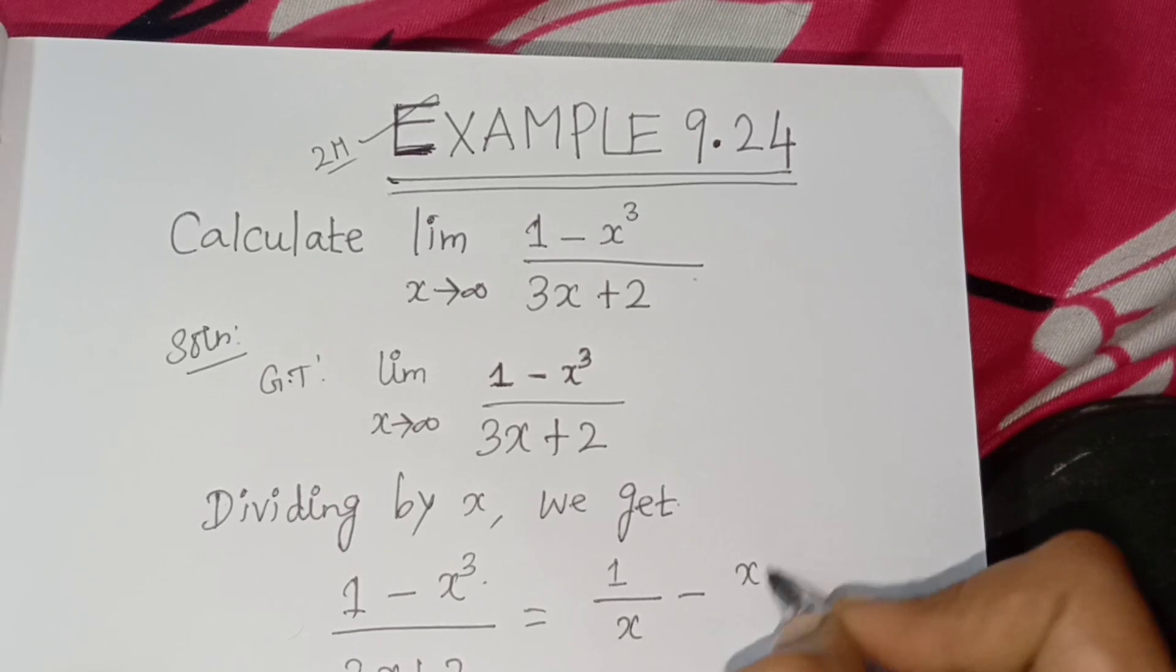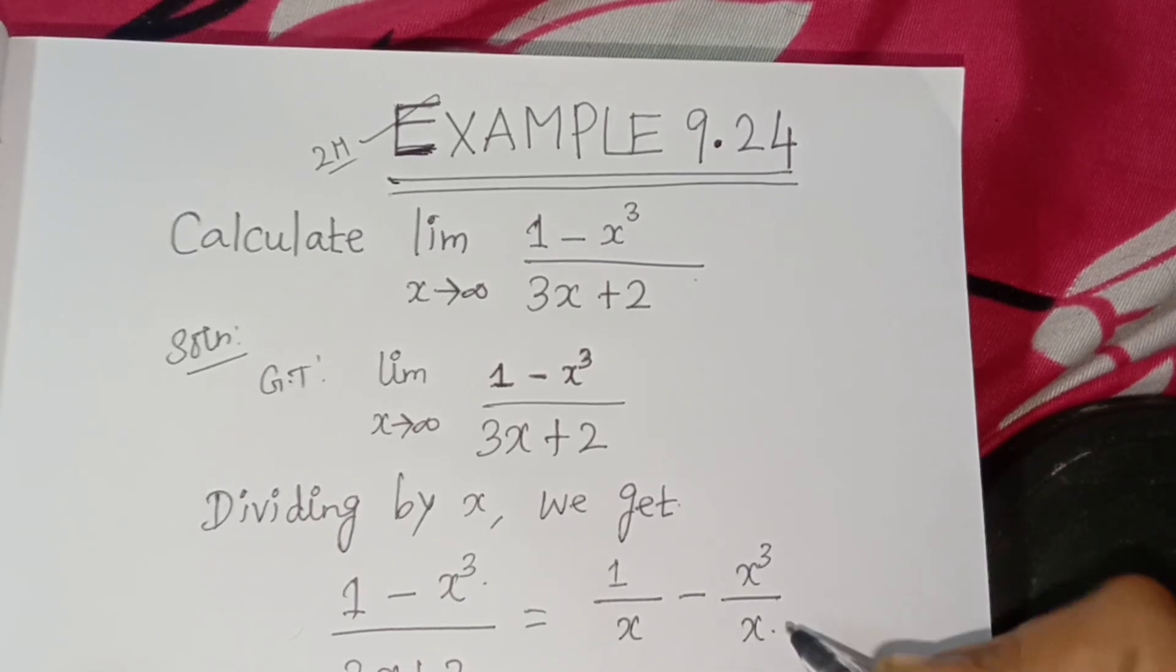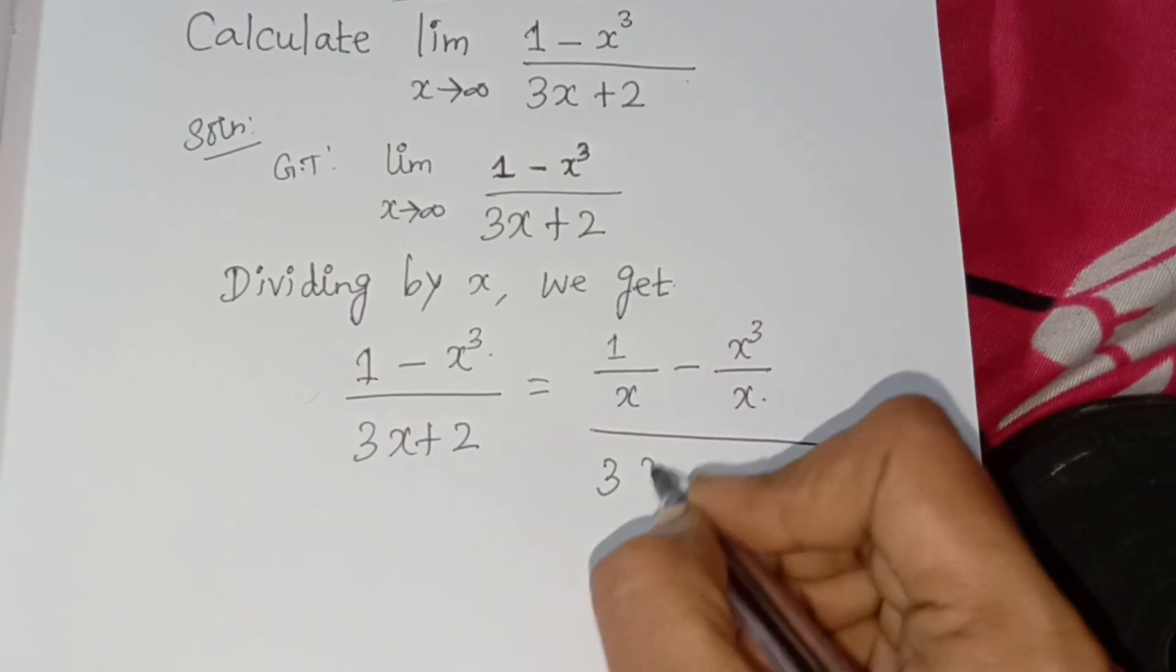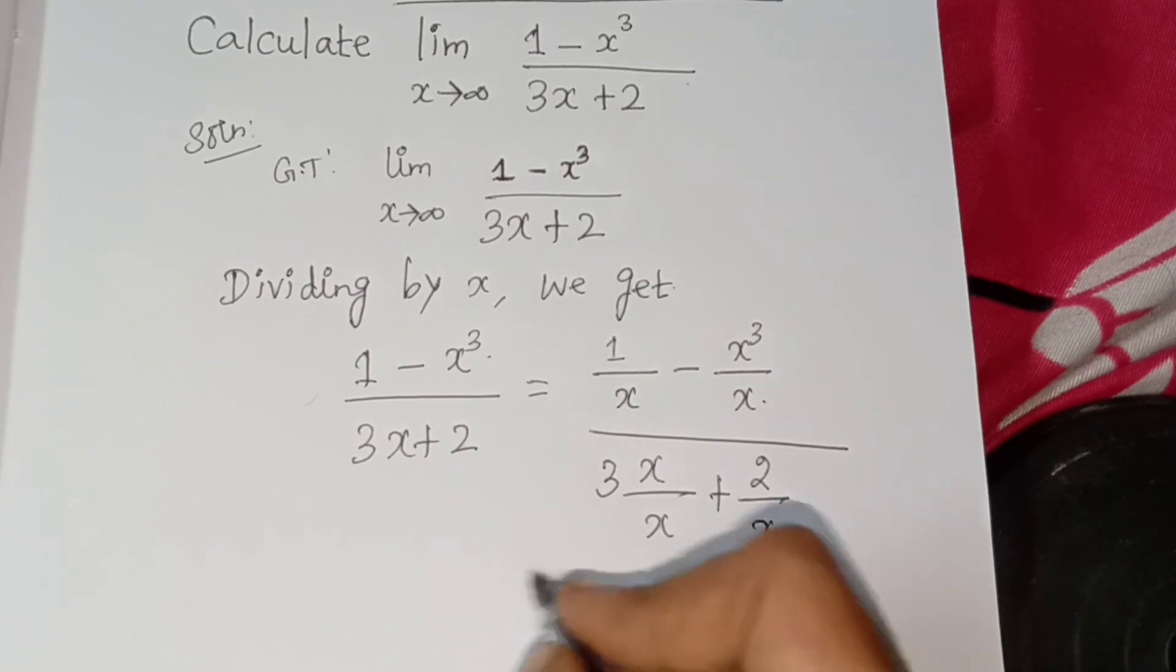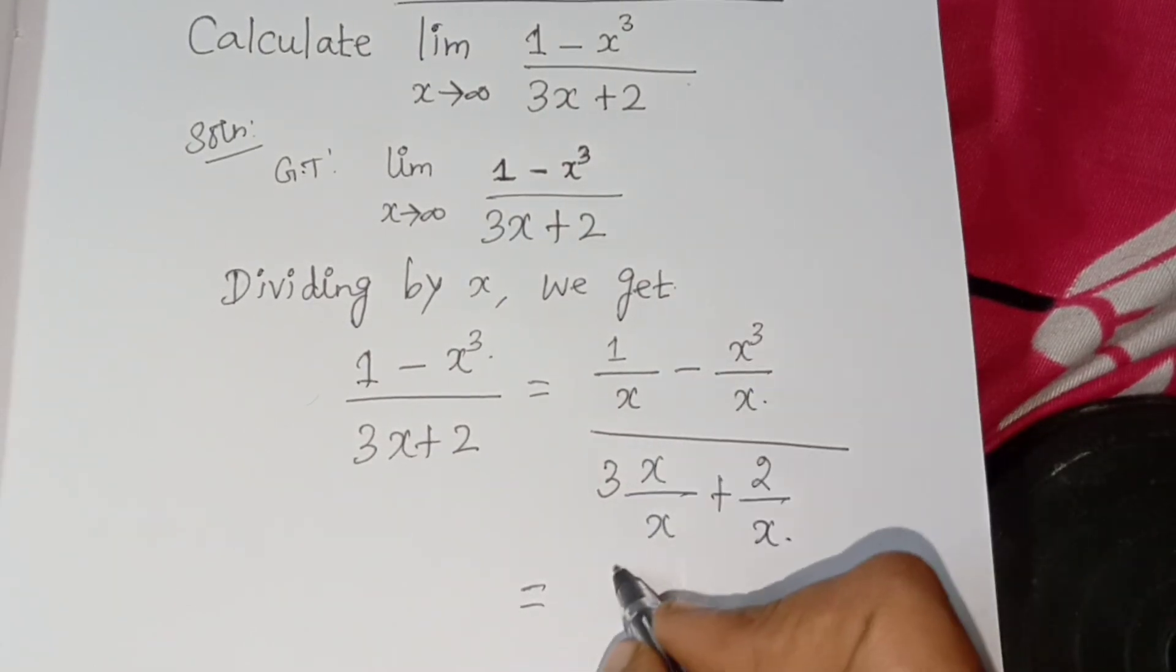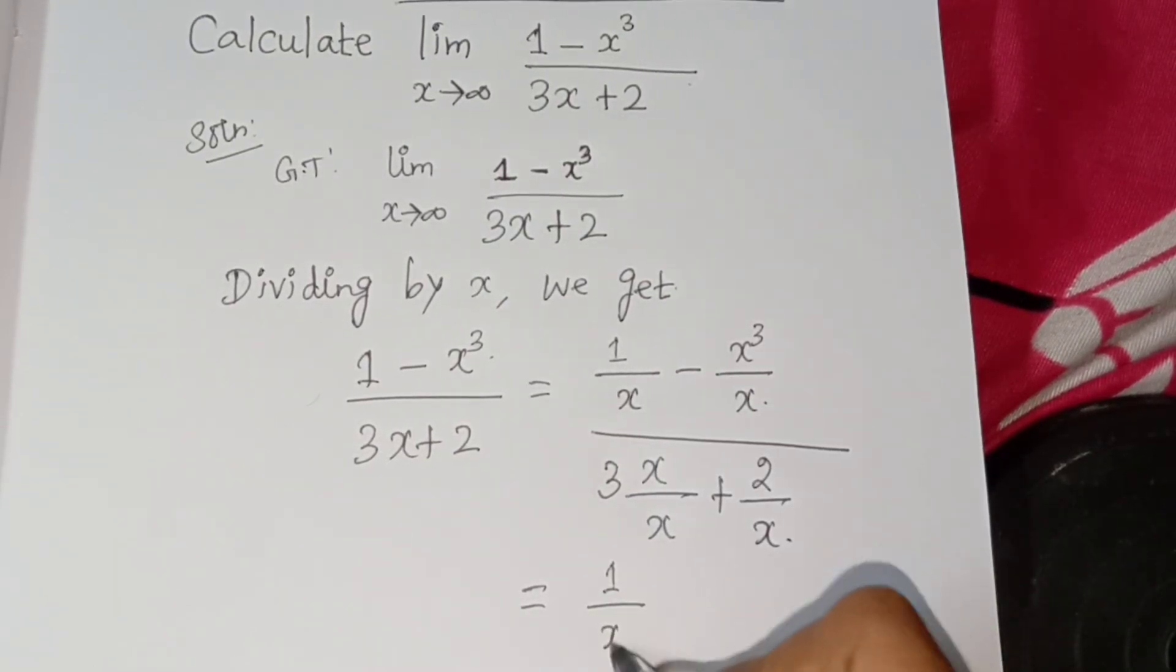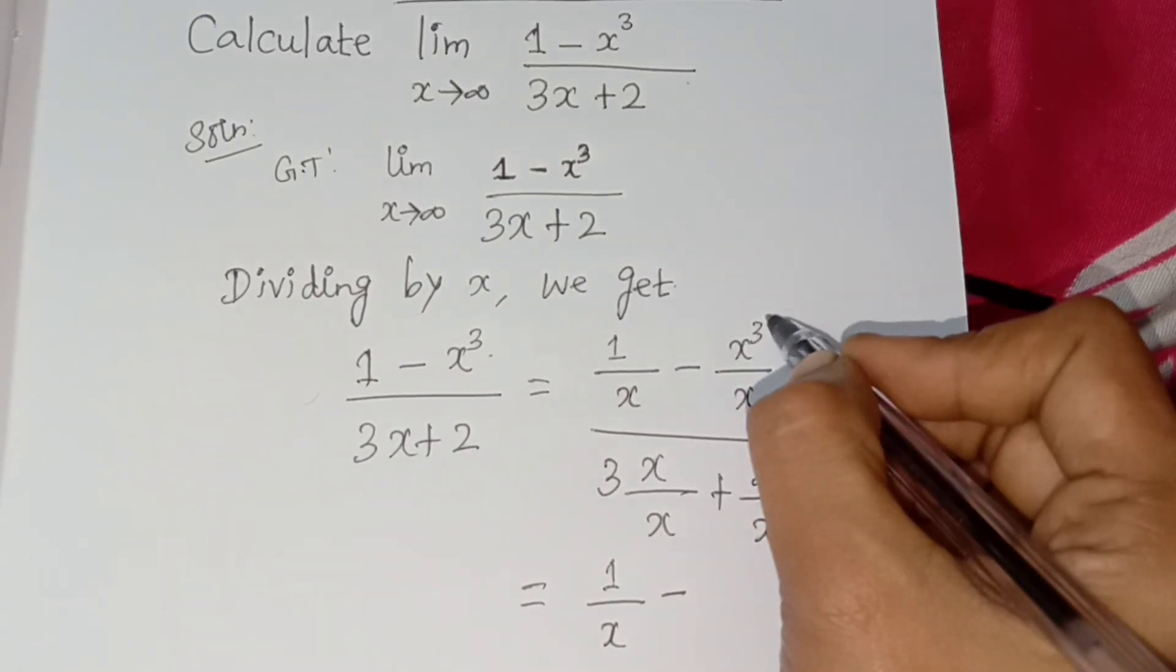Numerator divided by x plus 2 divided by x plus 1 by x whole divided by 3 into x by x plus 2 divided by x. 1 by x minus x, x cancel so x square minus x square.